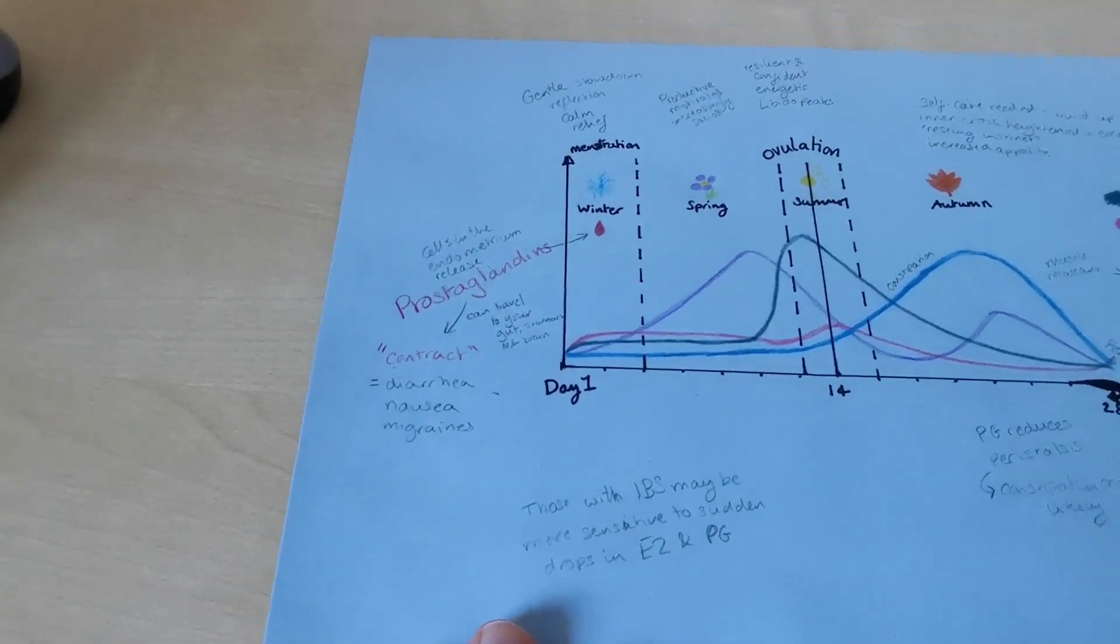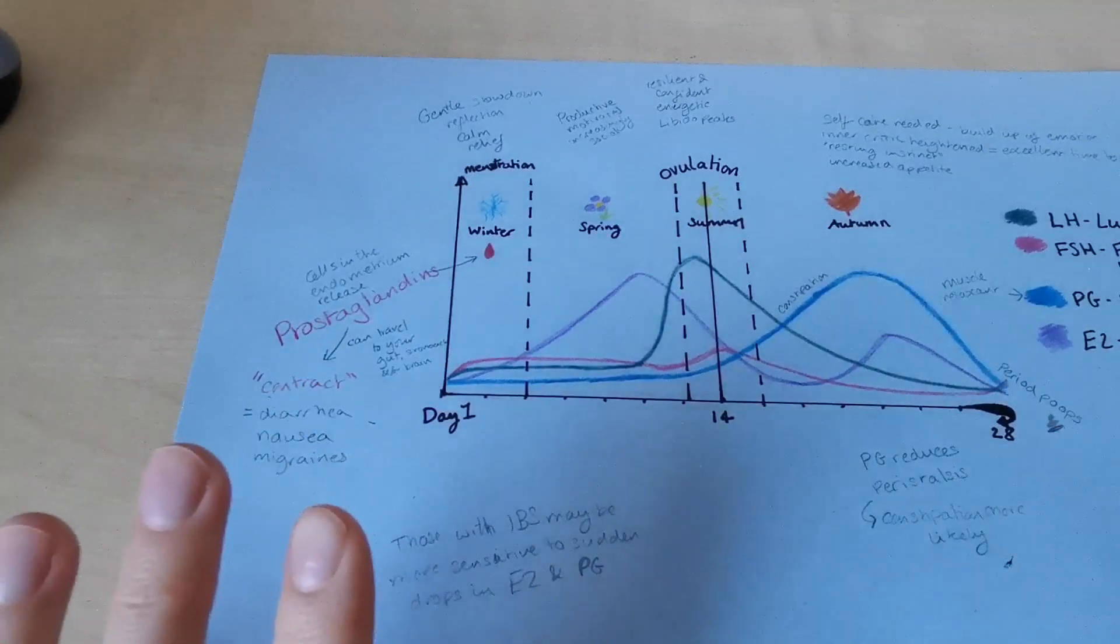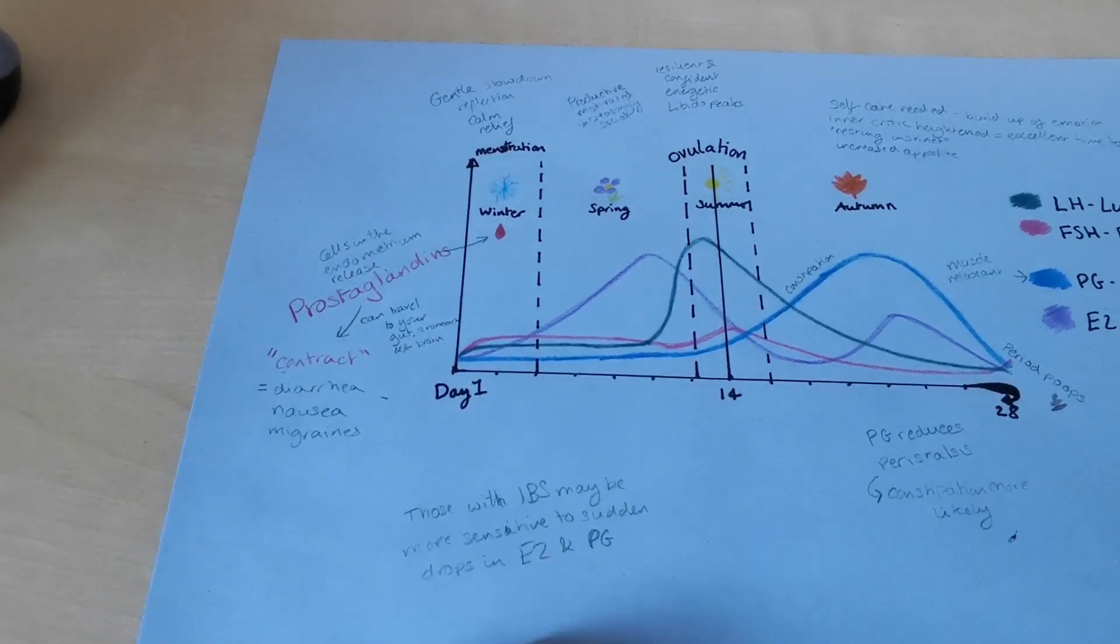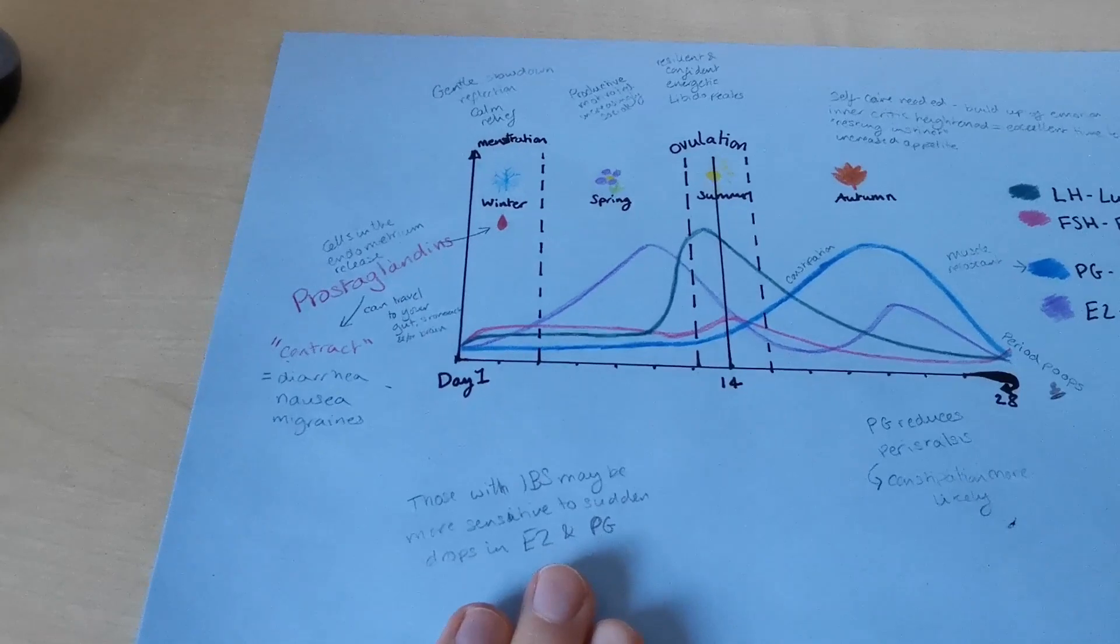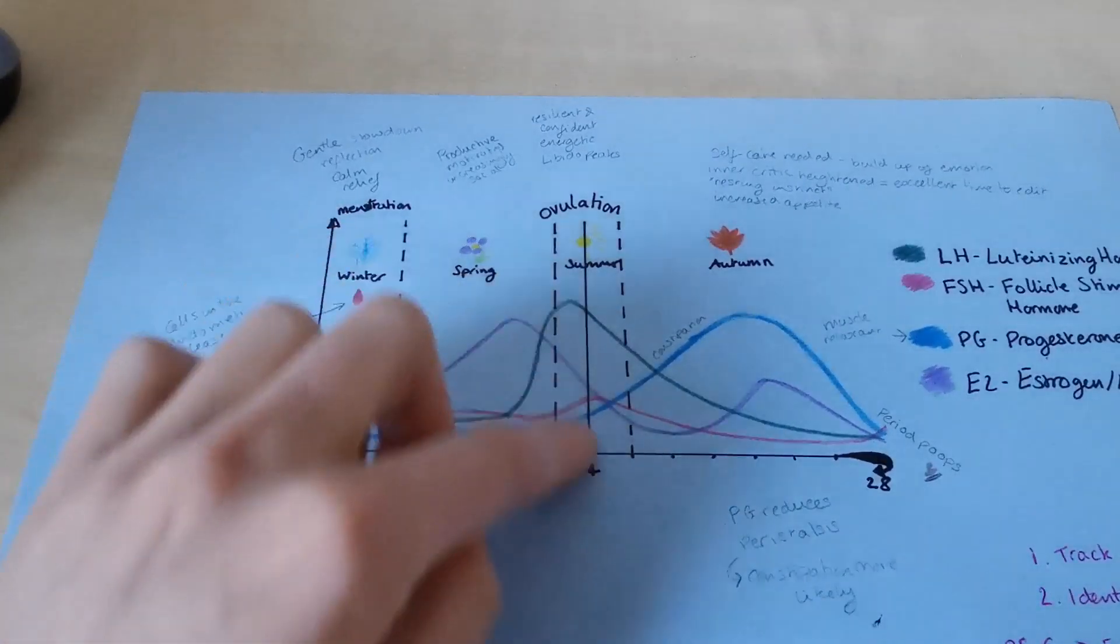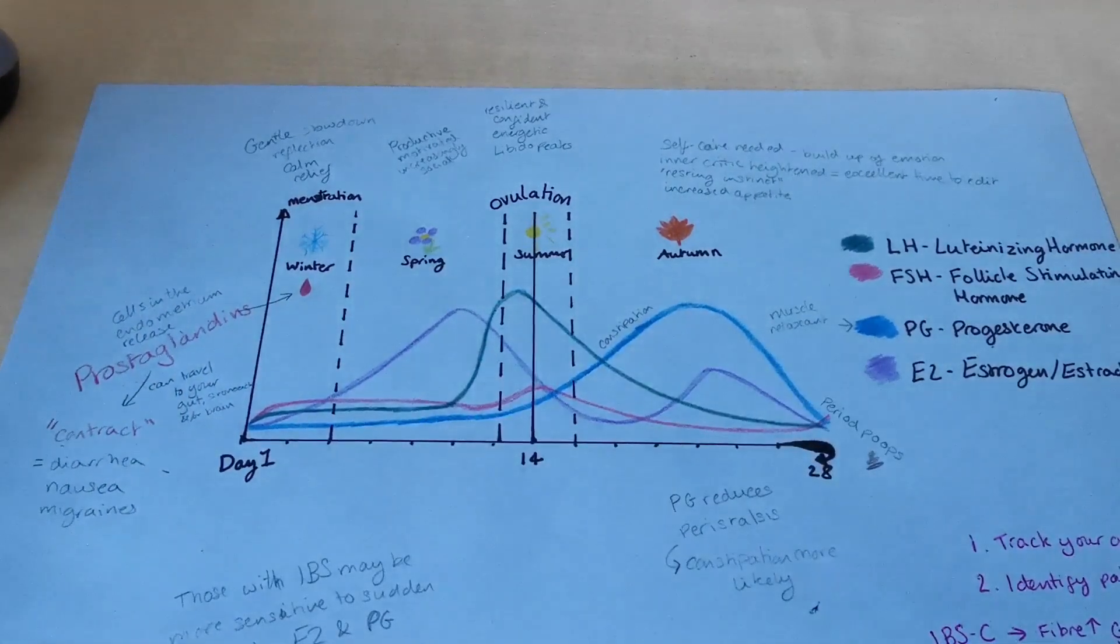There aren't actually many studies looking at this in general, but definitely in relation to IBS, there aren't very much. But it's thought that people with IBS are maybe more sensitive to the sudden drops in progesterone and estrogen.